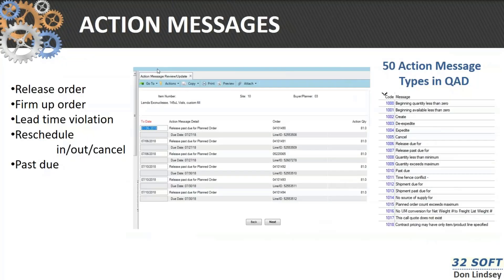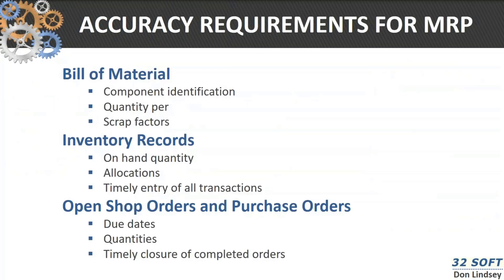Those are the rules for misalignment. If you look at the order action messages, MRP has a tool that allows you to deal with all of the order action messages. There are over 50 action messages in QAD that you should become aware of.